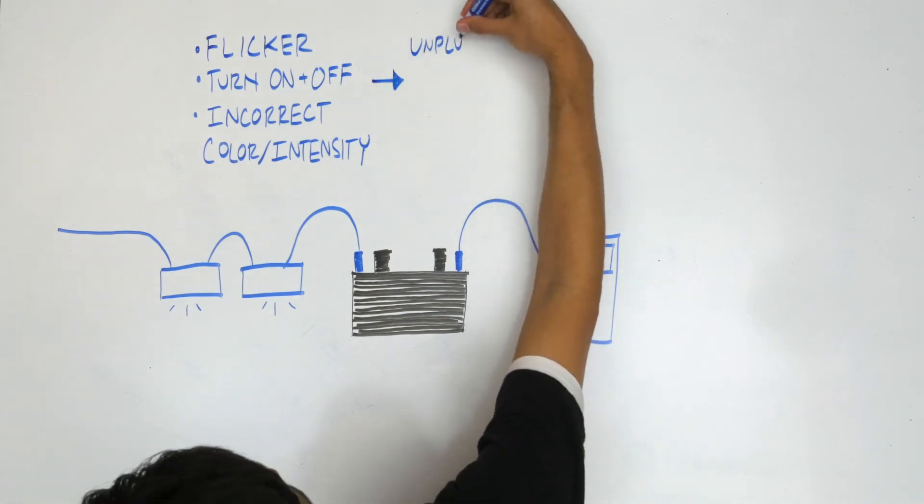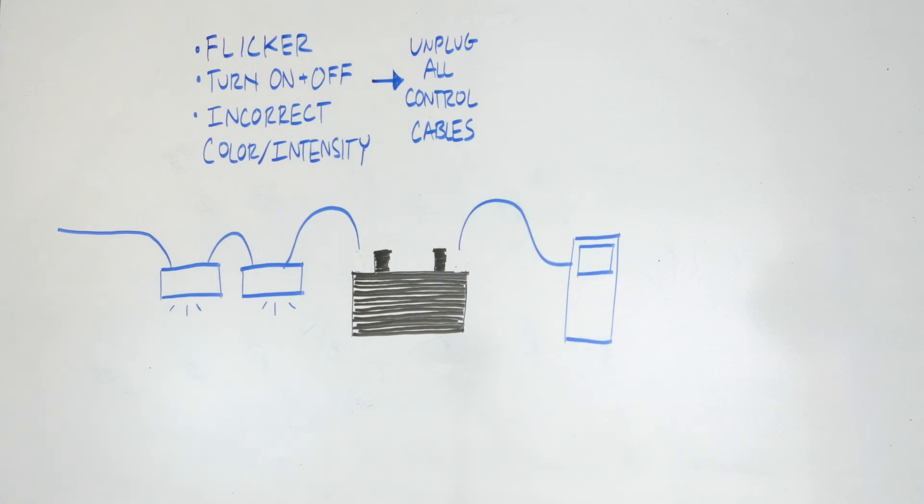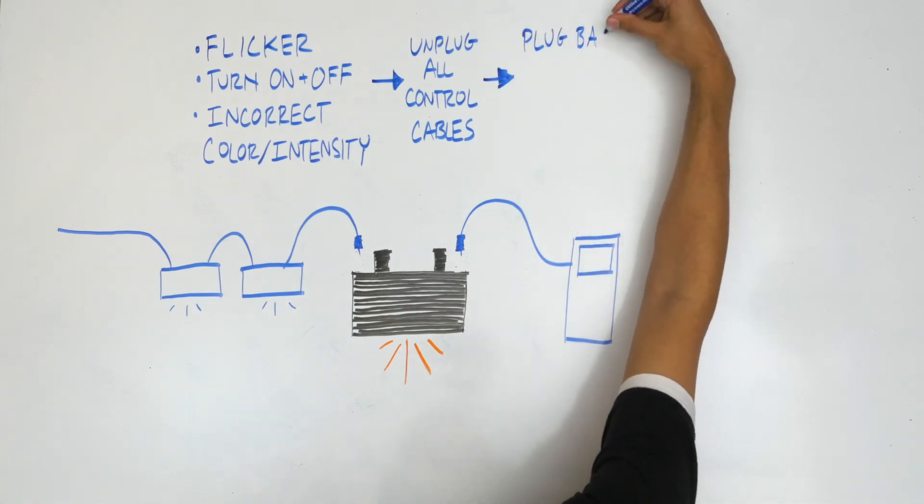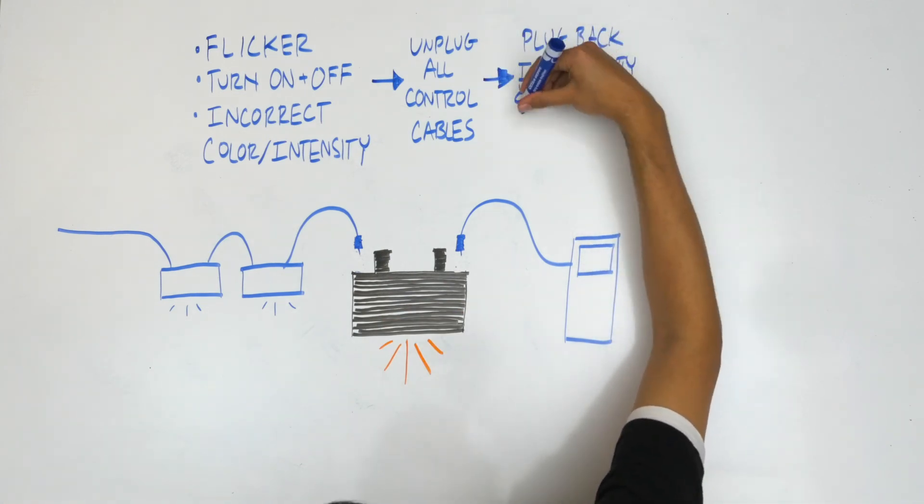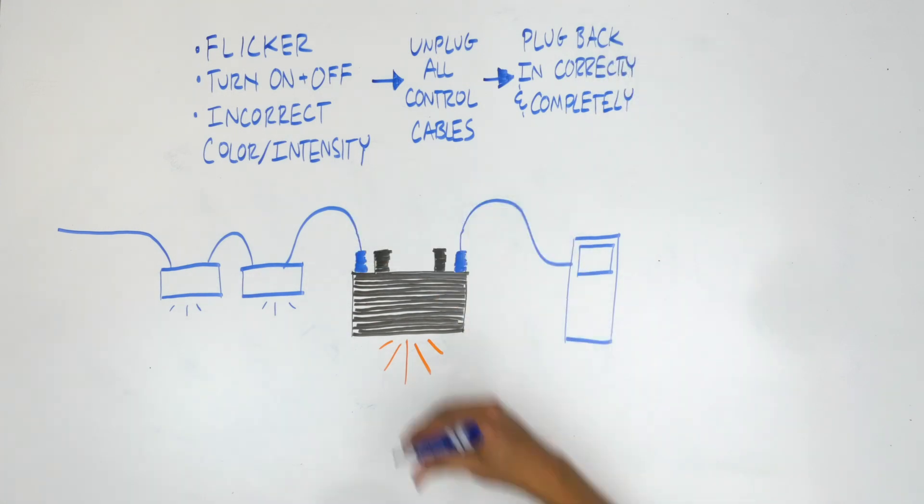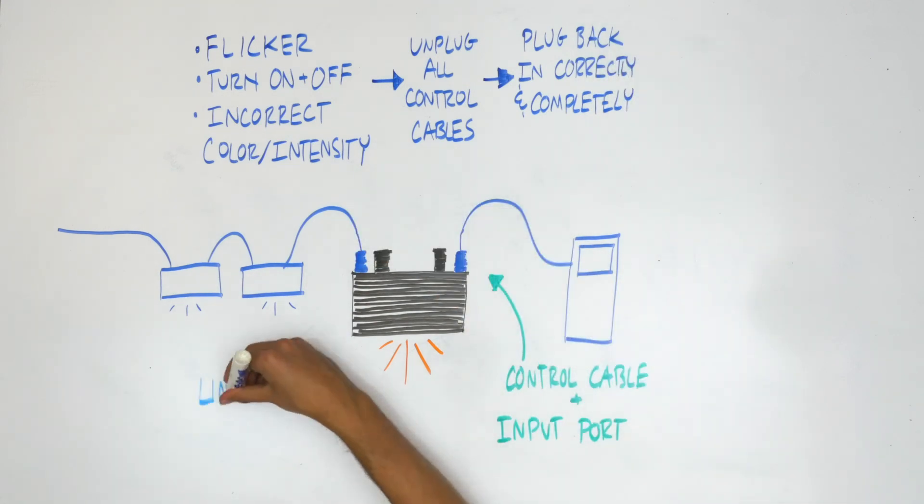First, unplug all control cables and proceed to test the functionality of the light. If everything works as it is supposed to at this point, the next step is to plug everything back in, making sure that any control cables are plugged into the correct input or output ports and that they are plugged in all the way.